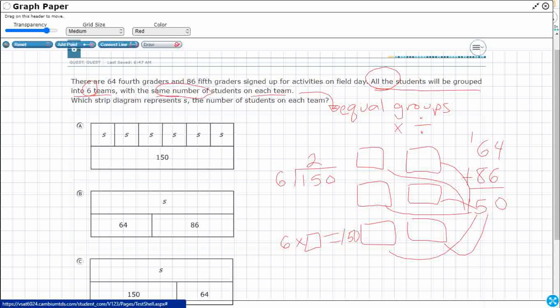Six goes into 15 twice. And that's 12. Bring it down. 30. Yeah, 25. No remainder. So six groups of 25 would work.